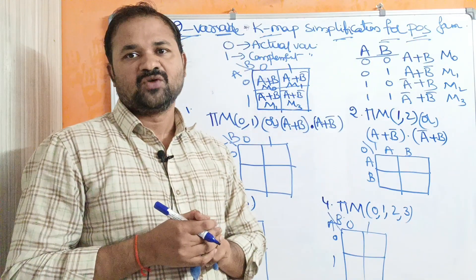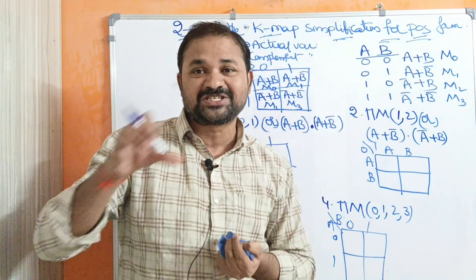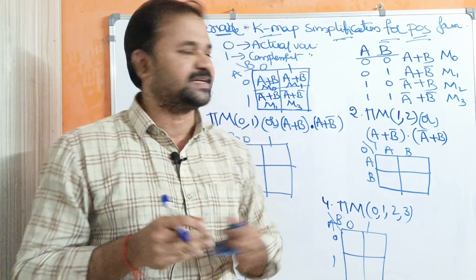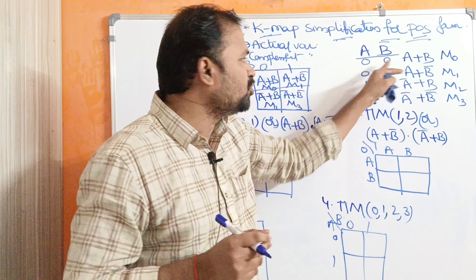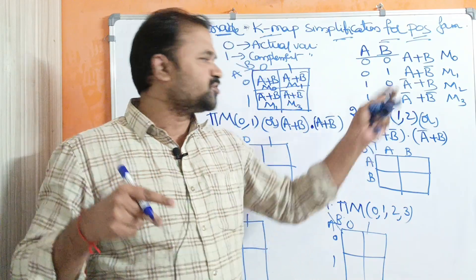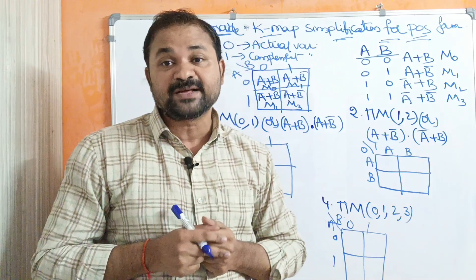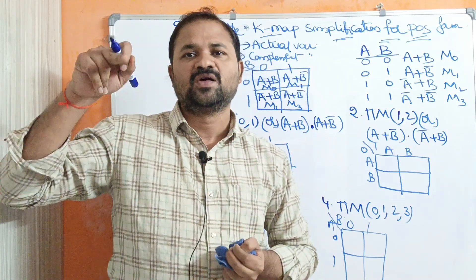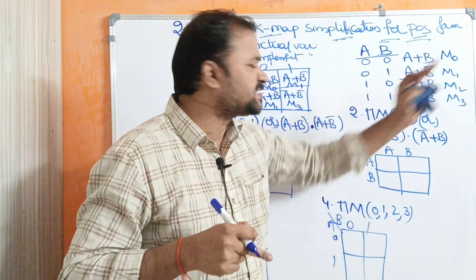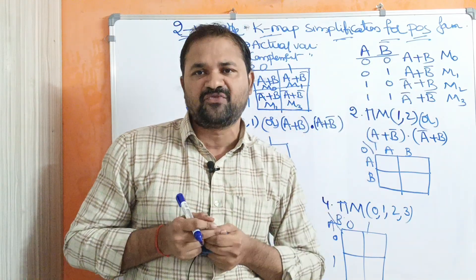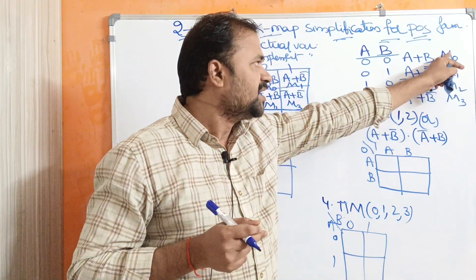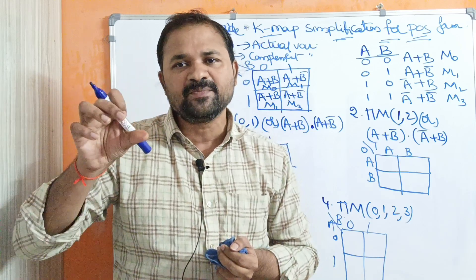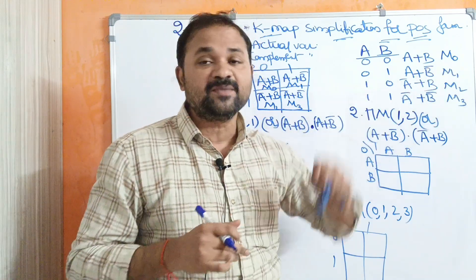00 means A plus B. Why? Because in a max term, we perform OR operation on the variables or literals. A plus B with 00 in decimal notation is 0, so this is max term M0. Next, 01 means: 0 is the actual variable A, and 1 means complement of the variable, so A plus B bar. 01 in decimal notation is 1, so this max term is M1. Note: capital M represents max terms, while lowercase m represents min terms.